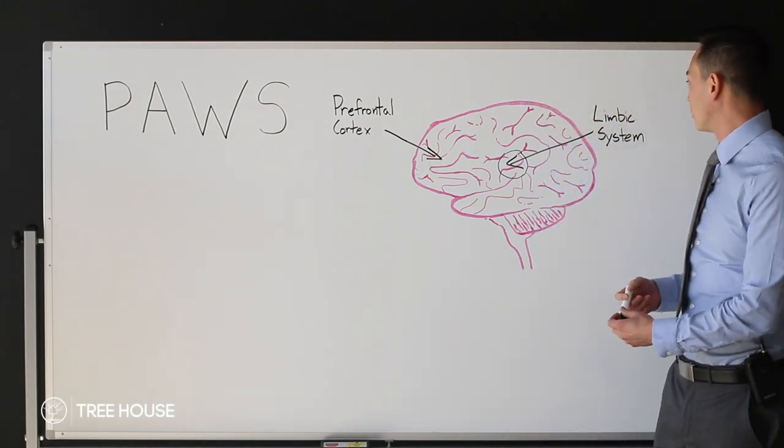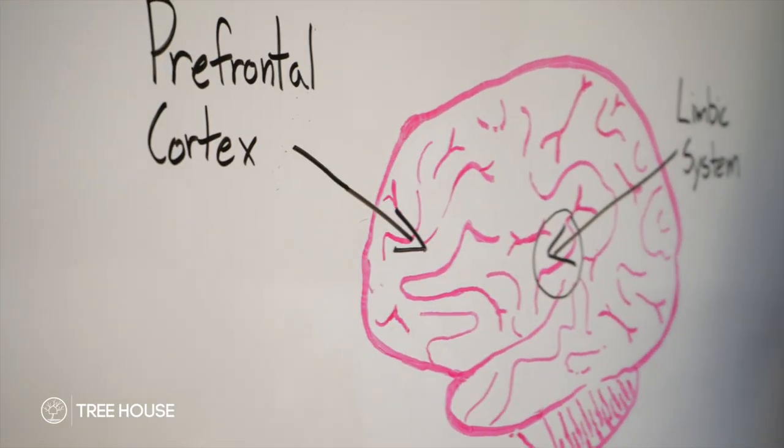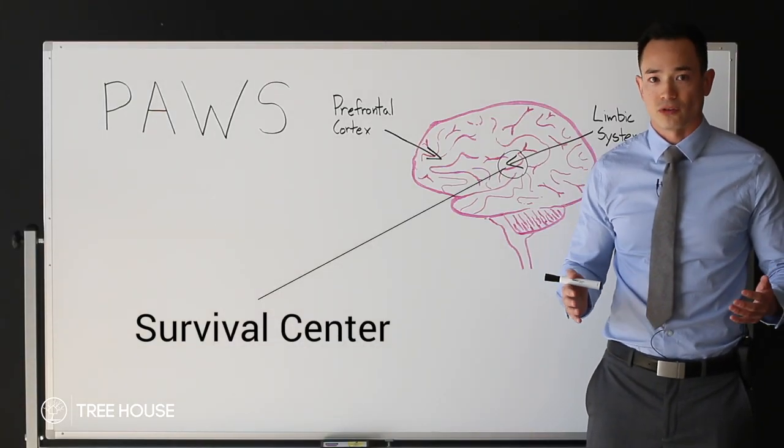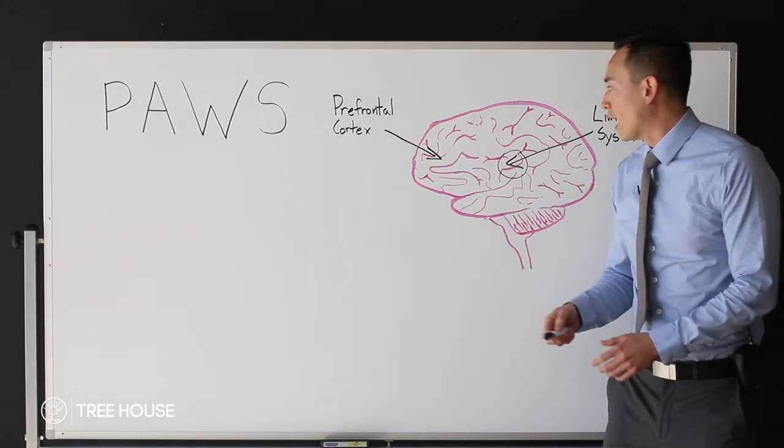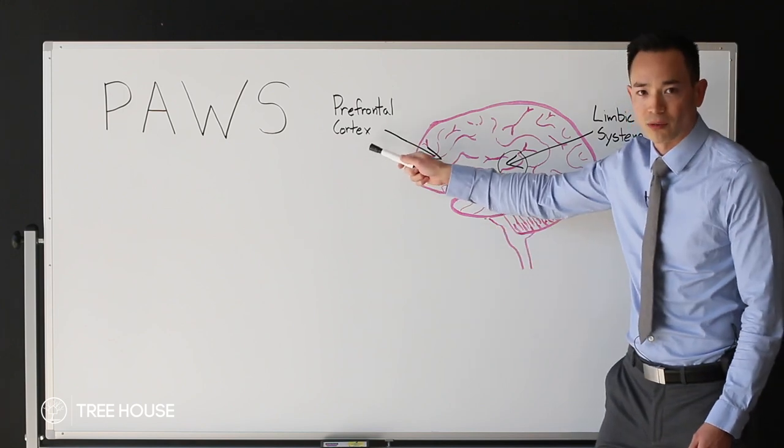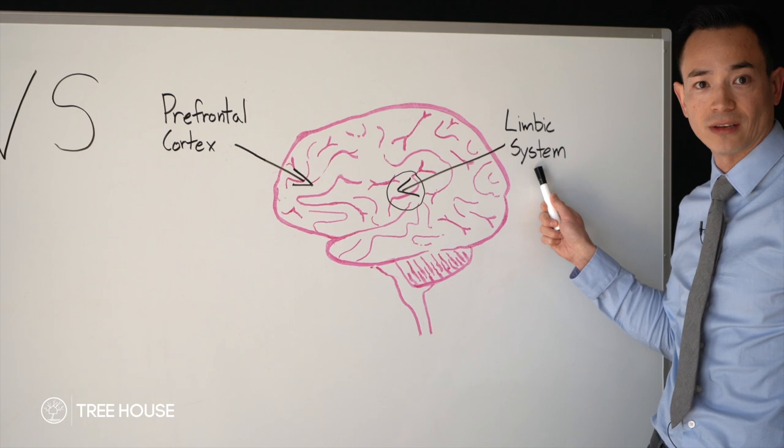We're also going to be talking about the limbic system. The limbic system is the survival center of the brain and it jumps into action whenever there's a threat. It's very animalistic or primitive. How a healthy operating brain works is the prefrontal cortex runs the show unless there's a threat, and then the limbic system springs into action.